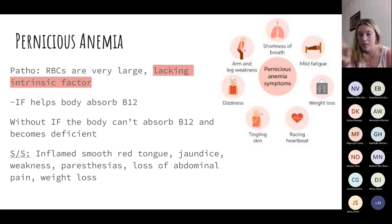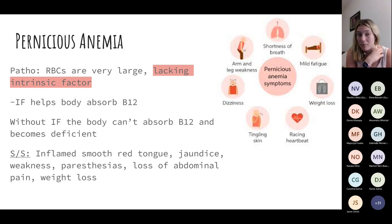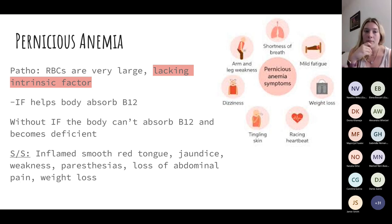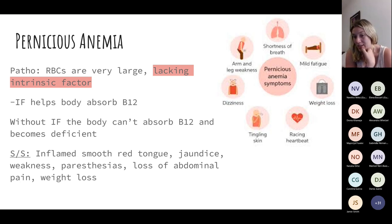Pernicious anemia: these red blood cells are very large but lack intrinsic factor — making this a macrocytic anemia. Intrinsic factor helps our body absorb B12. If we can't absorb B12, we become B12 deficient. Signs and symptoms include an inflamed, smooth, red tongue, jaundice, weakness, and paresthesias. These patients are also going to have diarrhea, abdominal issues, pain, and weight loss because they aren't able to hold on to whatever nutrients they're receiving.